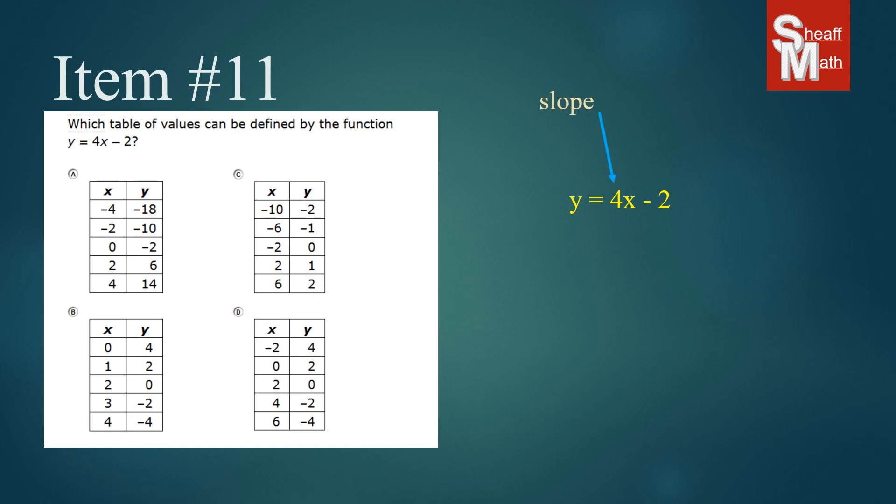The first thing to know is that slope intercept means that the number in front of x, that coefficient, that's the slope or the rate of change. The negative 2 there is the y-intercept, also known as the zero term.